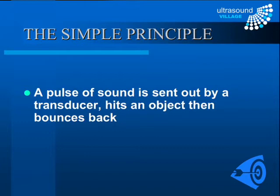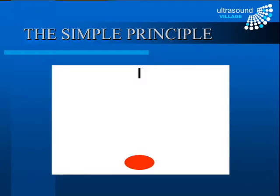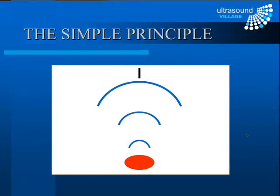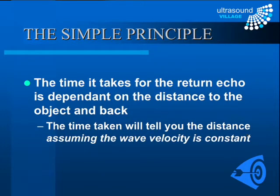At its most basic level, how does an ultrasound machine work? A pulse of sound is sent out by a transducer, it hits an object and bounces back. The time it takes for the return echo is dependent on the distance to the object and back. Assuming the wave velocity is constant, if we know that time and the velocity, we can calculate the distance between the transducer and the object.